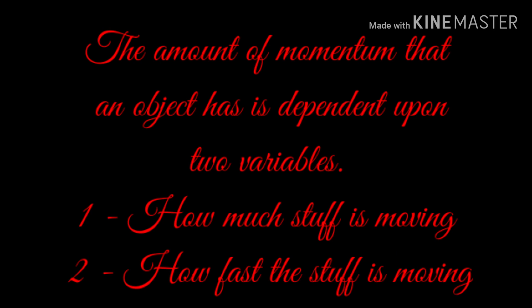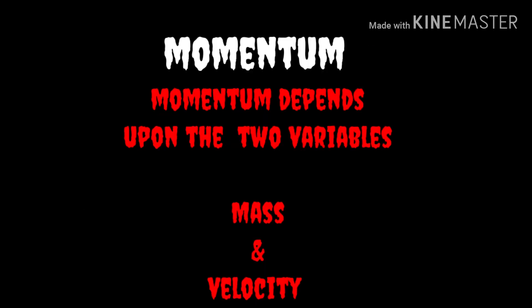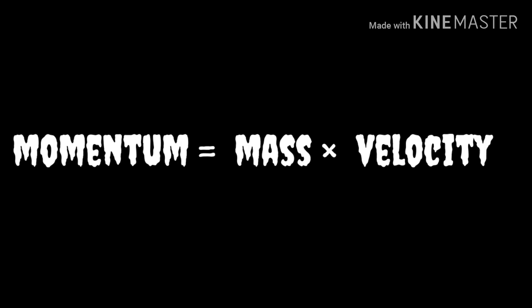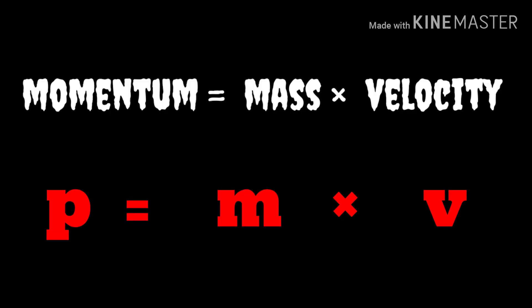The amount of momentum that an object has depends upon two variables: how much stuff is moving, and how fast the stuff is moving. Momentum depends upon the variables mass and velocity. In terms of an equation, the momentum of an object is equal to the mass of the object times the velocity of the object.